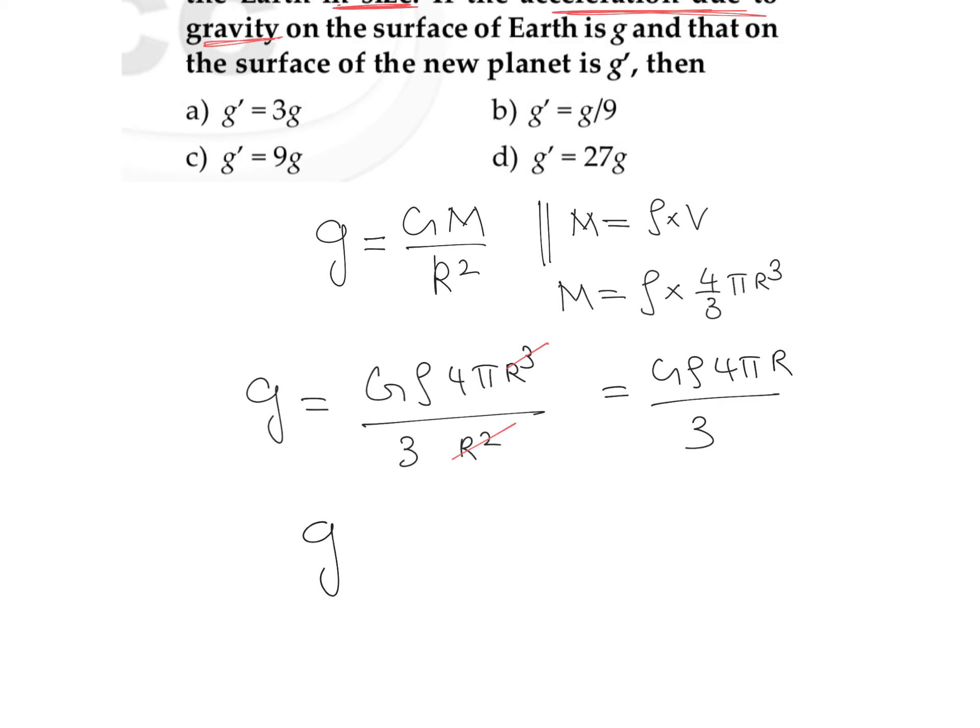Now it is better to write in terms of proportions. So we can say that g is directly proportional to density and directly proportional to radius. Other parameters are constant: this G is a constant, 4 is a constant, pi is a constant, 3 is a constant.